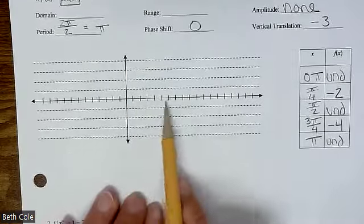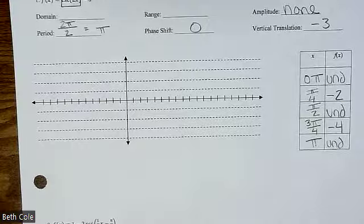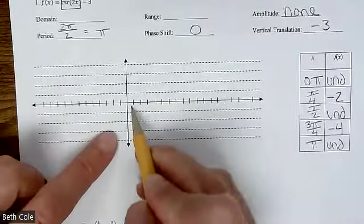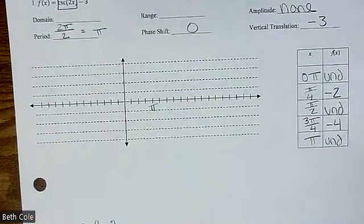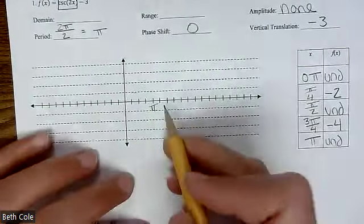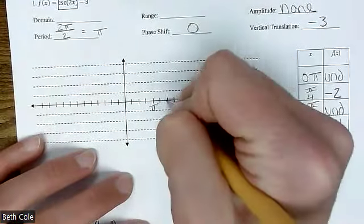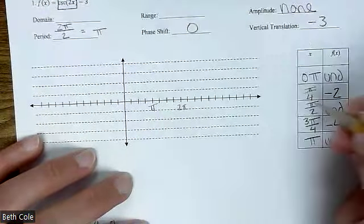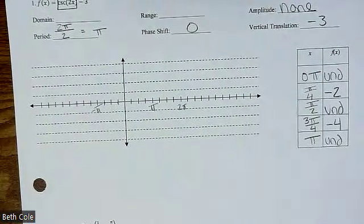What do I want each of my tick marks to be worth? What do I need to count by? Fourths. So the easiest way is go to the fourth one and call it pi — then you know all the ones in between are fourths. Then you can go to the eighth one and call that two pi, or go to the left and call that negative pi. Label at least three so I can know what you're doing.